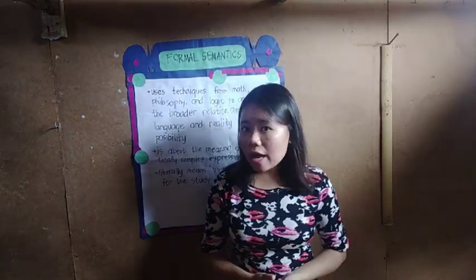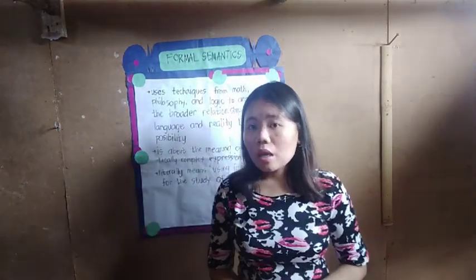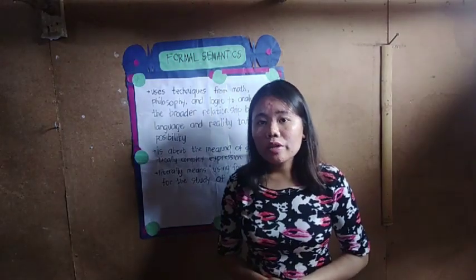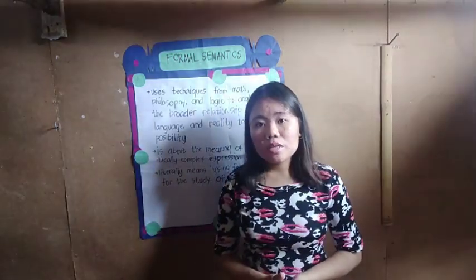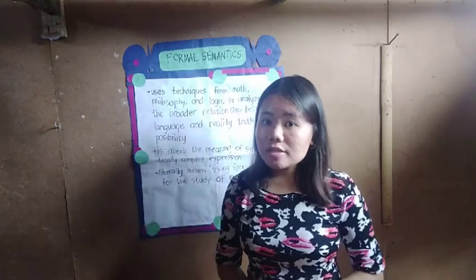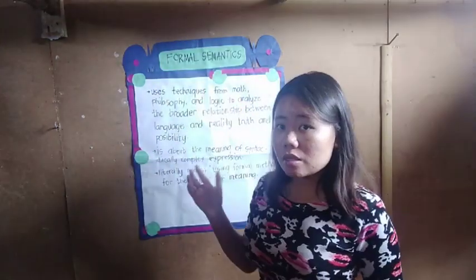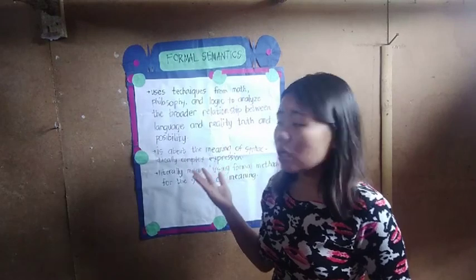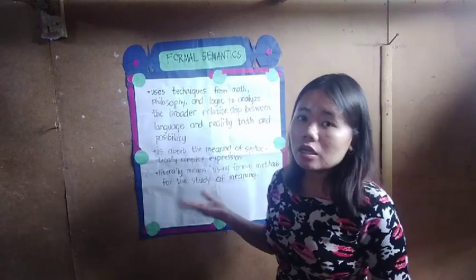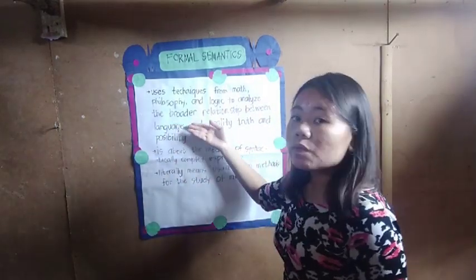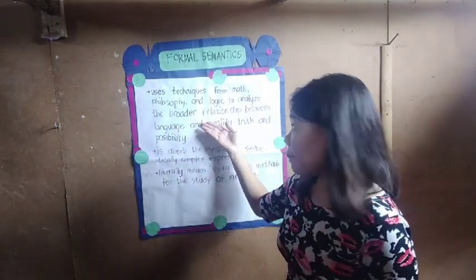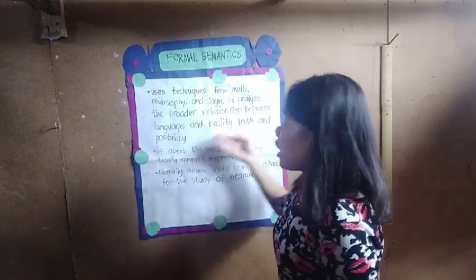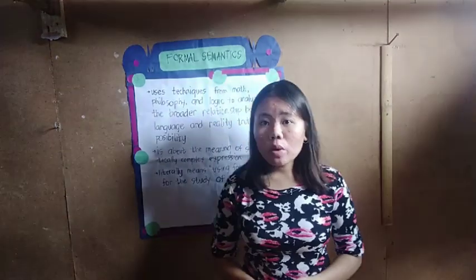We already discussed what semantics is. Today, we will look at the three theories of semantics. The first is formal semantics, which uses techniques from math, philosophy, and logic to analyze the broader relationship between language and reality, truth, and possibility.